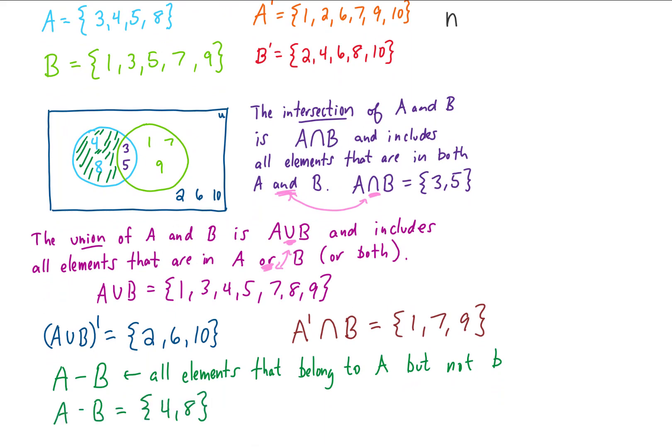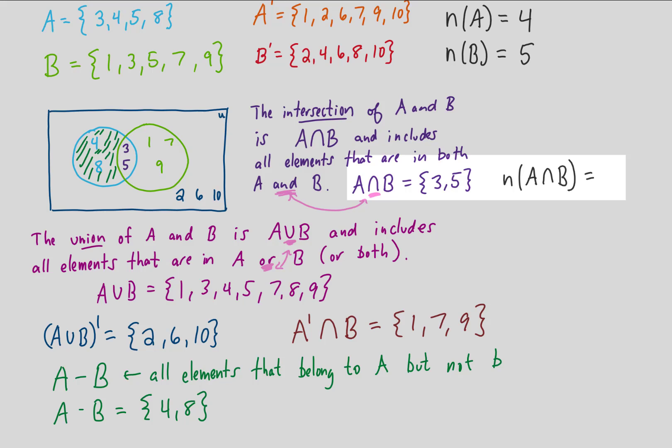Okay just a couple more thoughts and I'll let you go. Let's recall the notation for the cardinal number of a set. N of A, that just means the number of elements in A. And if we look over here at A, we see that A has 4 elements. The number of elements in B you can see is 5. Let's go down here and look at the number of elements in A and B, or A intersected with B. And we see from this set that we have 2 elements. One more, let's look at the number of elements in A union B. We can see from this set that there are 7 elements in the union of A and B.